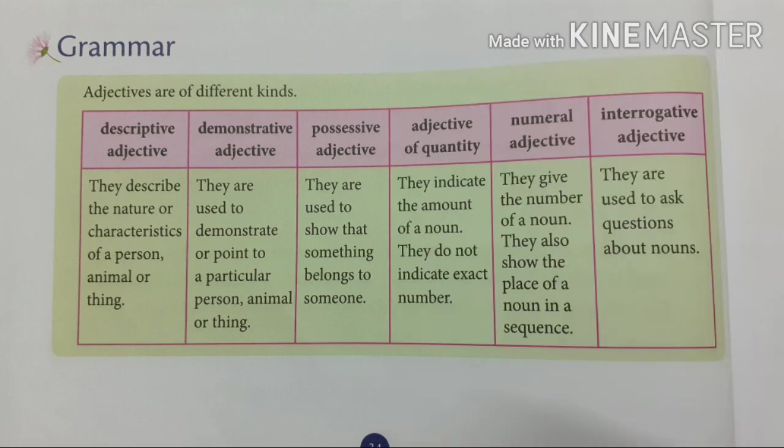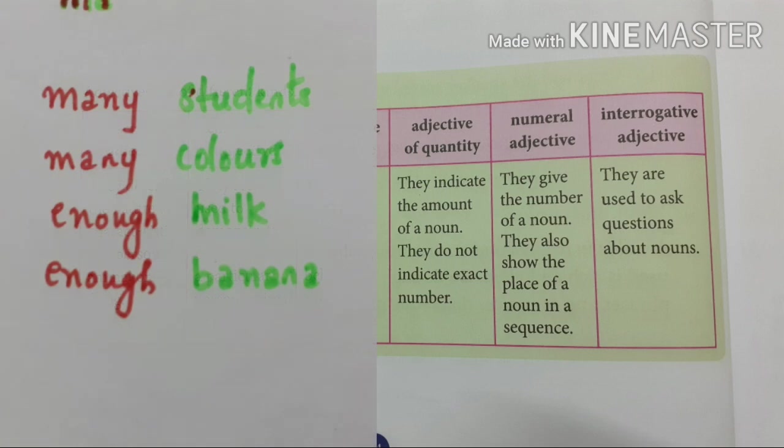An adjective of quantity — they indicate the amount of a noun. They do not indicate exact number. For example: many students, many colors, enough milk, enough banana. These are examples of adjectives of quantity.